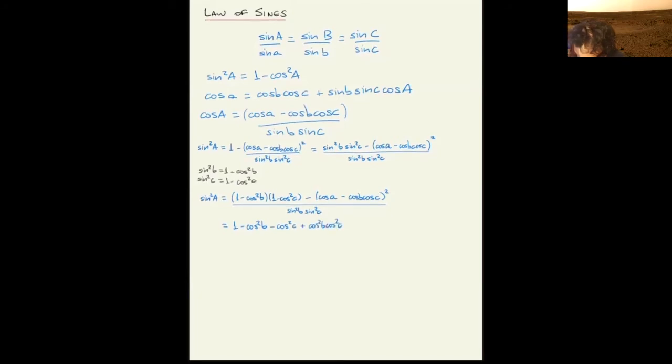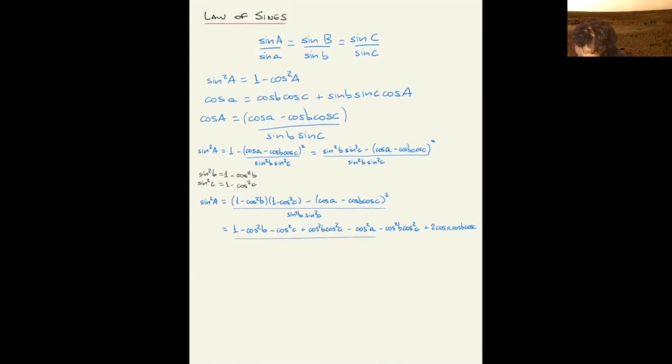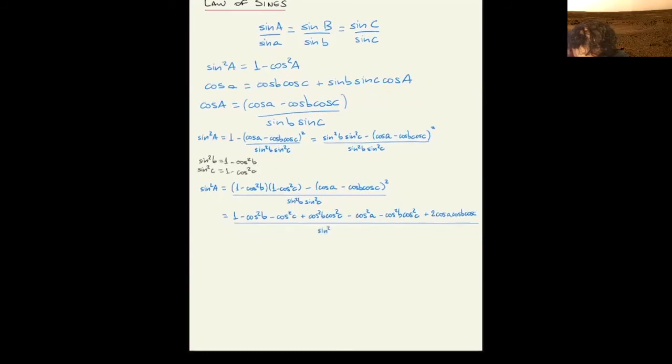And then this square here is minus cosine squared of a minus cosine squared of b cosine squared of c plus two cosine a cosine b cosine c. Now put that under sine of b squared sine of c squared.